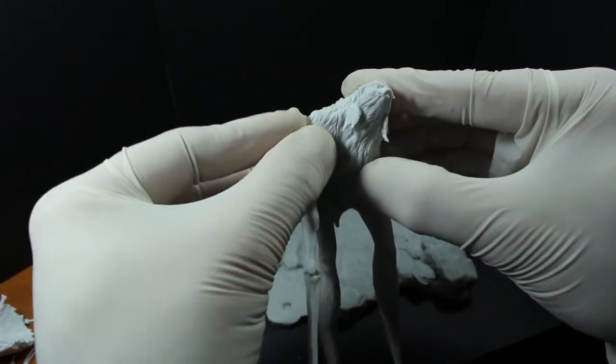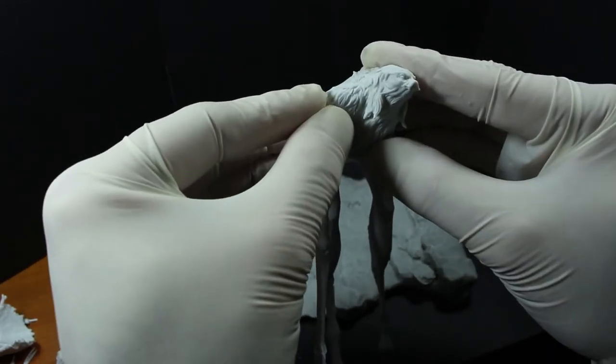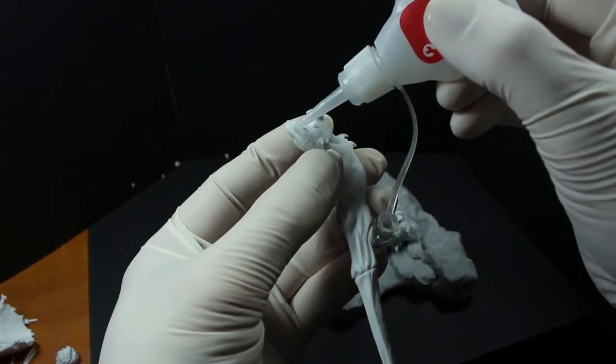Most of the gates, the resin casting gates are on the inside of the joins, so you'll need to clean those off just to get a good fit.